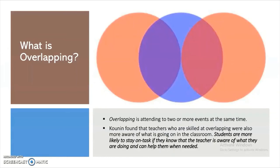Overlapping is attending to two or more events at the same time. Teachers who are skilled at overlapping are also more aware of what is going on in the classroom. Students are more likely to stay on task if they know that the teacher is aware of what they are doing and can help them when needed. For example, the teacher can give a student individual feedback and at the same time offer a quick word of encouragement to another student. Or, if the teacher is in the middle of a lecture and a student enters the room, the teacher should make eye contact with the student, have an area for the student to turn in work, and continue with the lesson. Once students are doing their work, the teacher can go to the tardy student and tell them what they missed or answer any questions from the homework assigned the night before.